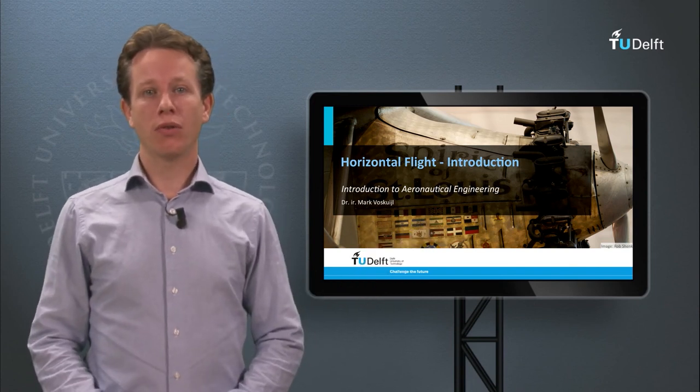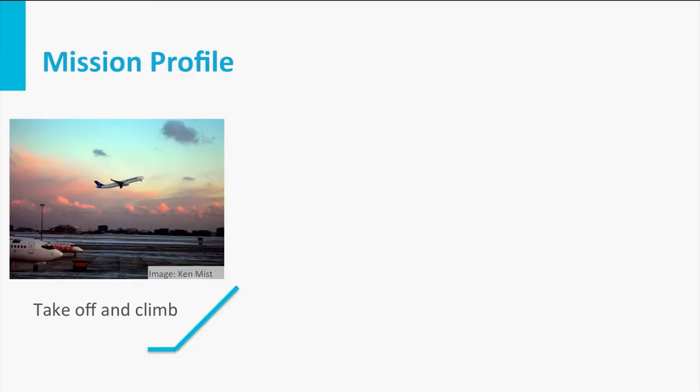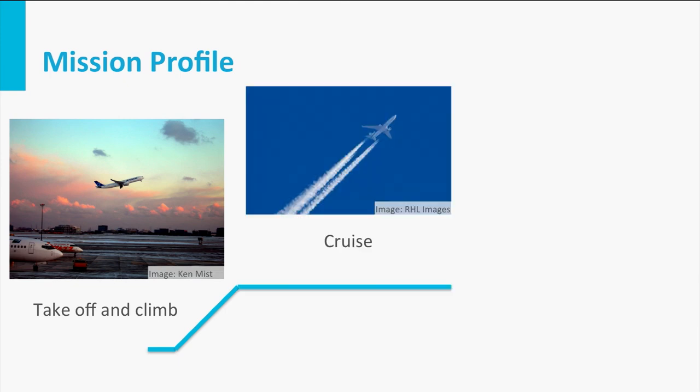A typical mission of an aircraft looks more or less like this. The aircraft starts with a take-off. Afterwards it will perform some turns and climb to its cruise altitude. Once the cruise phase is completed it will descend, and finally it will land safely on the destination airport.